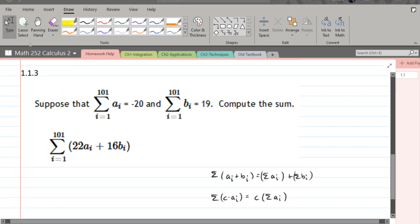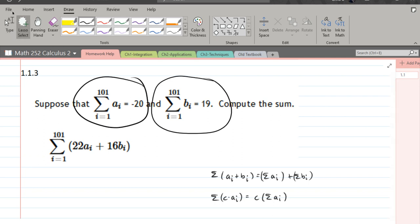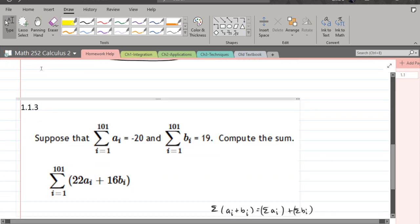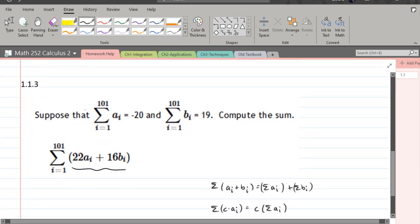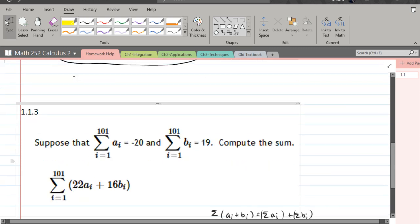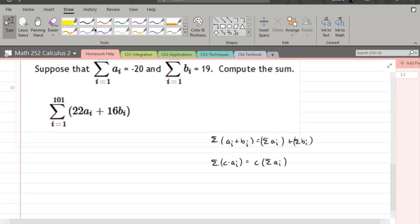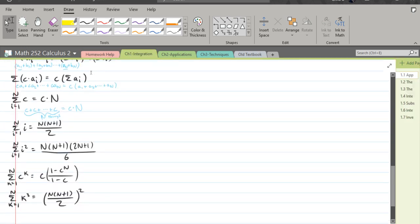So we have our next homework problem here. It's 1.1.3. And what they do in this problem is they give us some information. They don't tell us what these actual terms are, but they do tell us what they add up to. And the other thing that's given to us is we have a summation here. We do start at the same value and we end at the same value. So that's super important. And what we're going to do is use the summation formulas. They're in the textbook. They're also here in the notes.